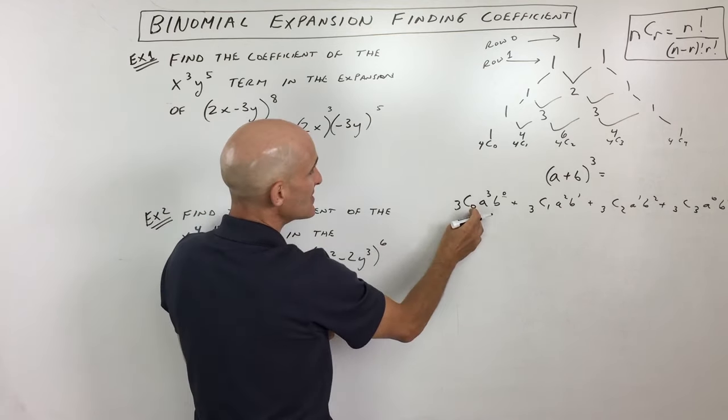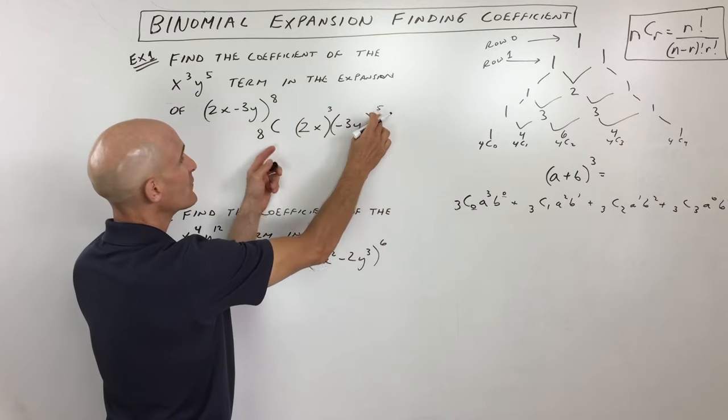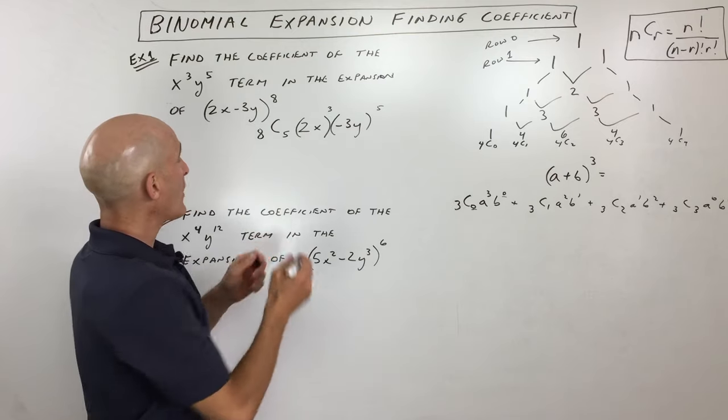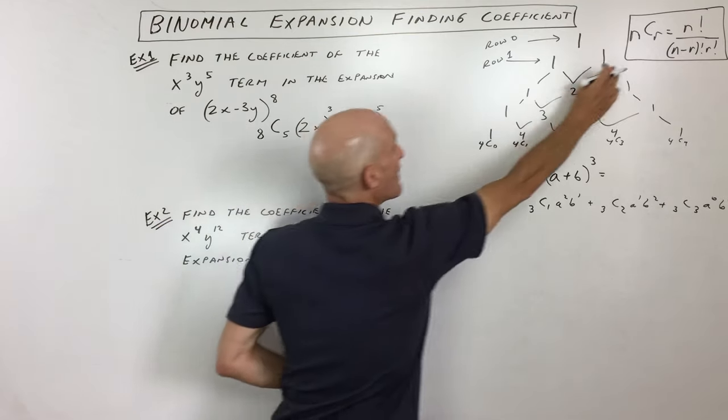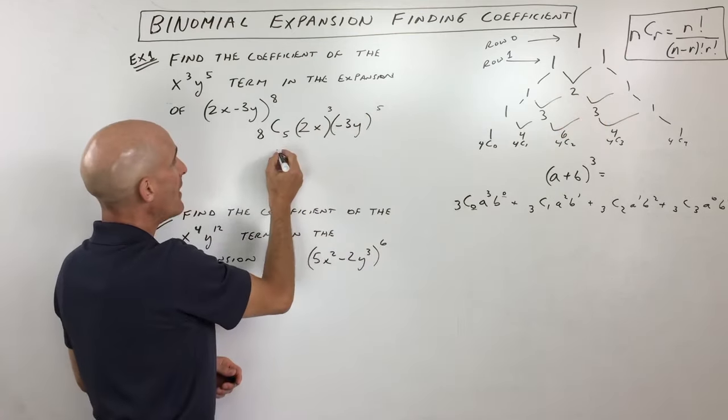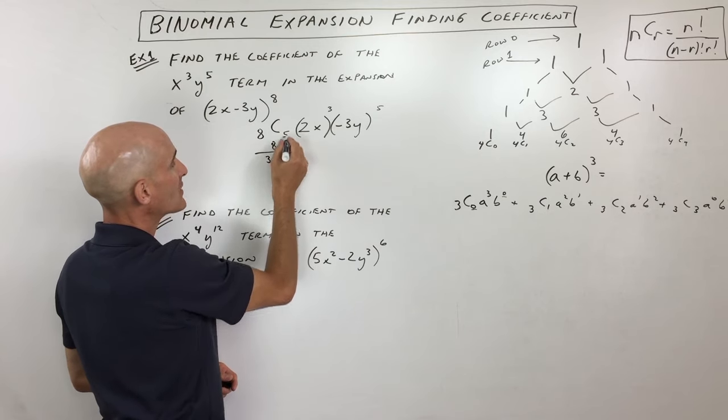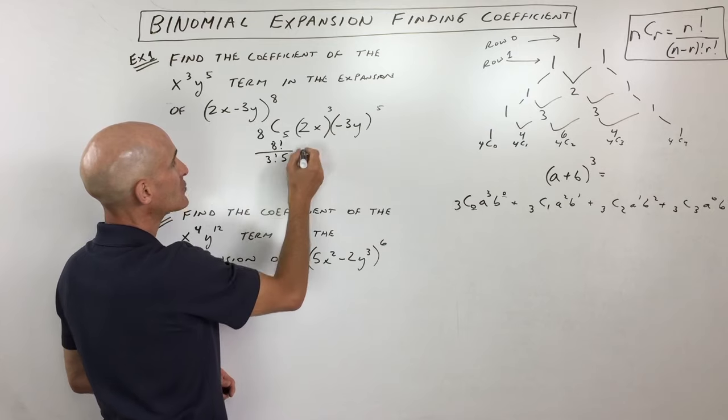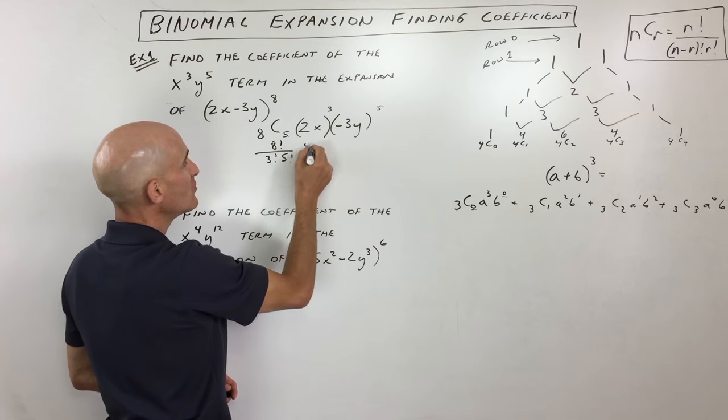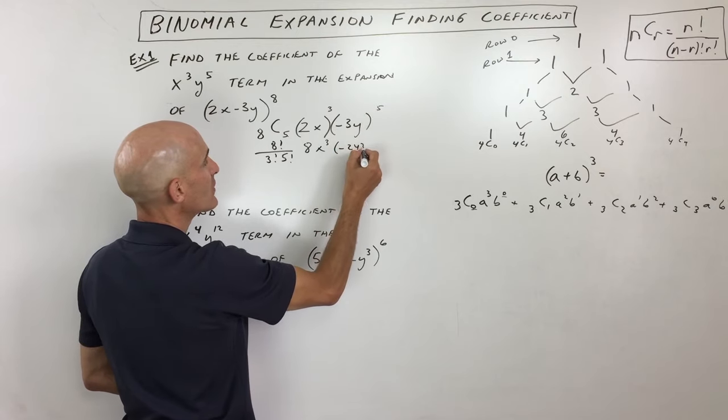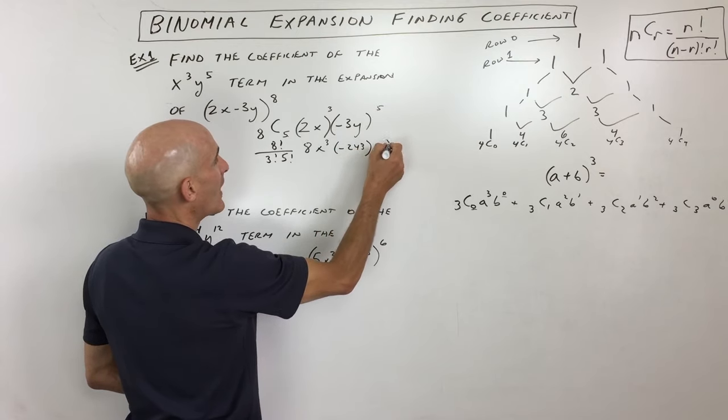Well, remember the pattern. See 0, 0, 1, 1, 2, 2, and so on. So if this is 5, this is going to be 5 as well. So now all we have to do is we're going to use the formula over here for combinations. So 8 choose 5. That's 8 factorial over (8 minus 5), 3 factorial times 5 factorial. And then we've got 2x cubed, which is 2 cubed is 8. Negative 3 to the fifth is negative 243y to the fifth.